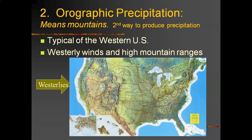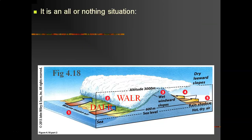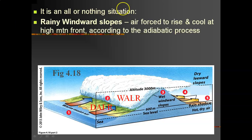These are pretty tall mountain ranges, getting up to over 14,000 feet — the winds hit a very, very high mountain wall, almost three miles high. Here's a figure of a high mountain range, about 14,000 feet or about three miles tall. What I want to point out is it really is an all-or-nothing situation: one side of the mountain range gets all the rain and the other side gets nothing.